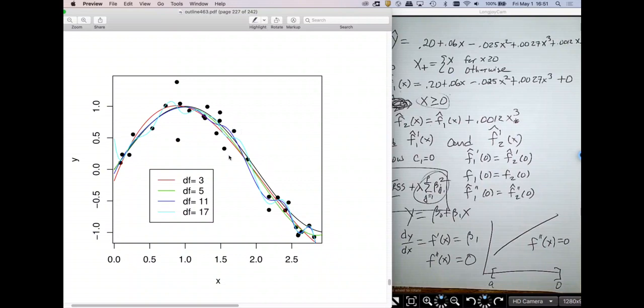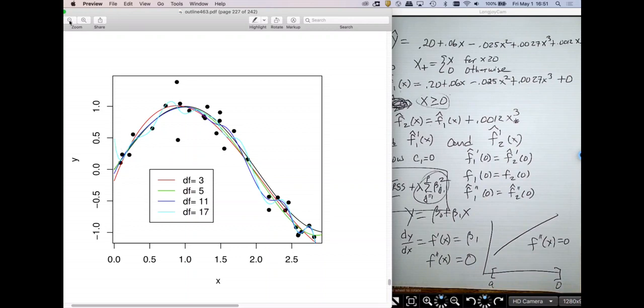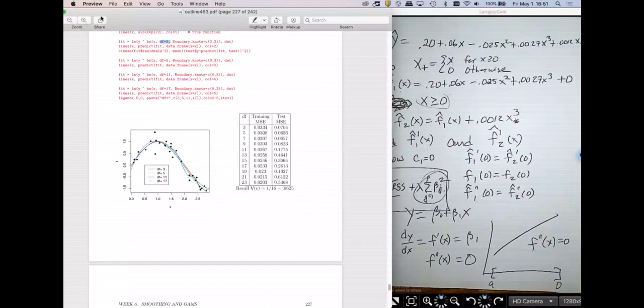So I'll make it a little bit bigger. So you see the cyan function with 17 degrees of freedom wiggles a lot. The dark blue with 11 wiggles less, but it wiggles probably too much. Whereas the green function is really good. The green function is great. You can see at the end it's getting it quite right. Whereas the red one doesn't have enough flexibility to make that final turn. The green one is making the final turn. Cyan is just out of control.